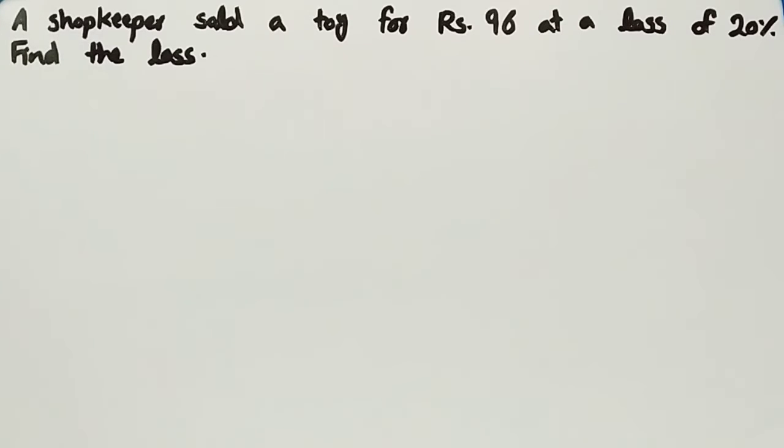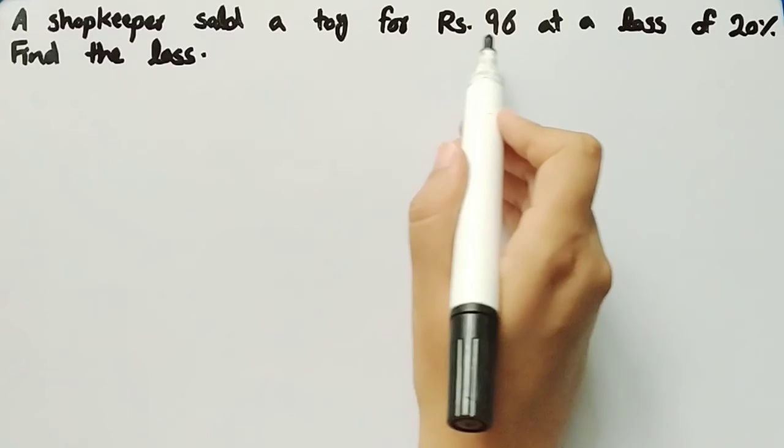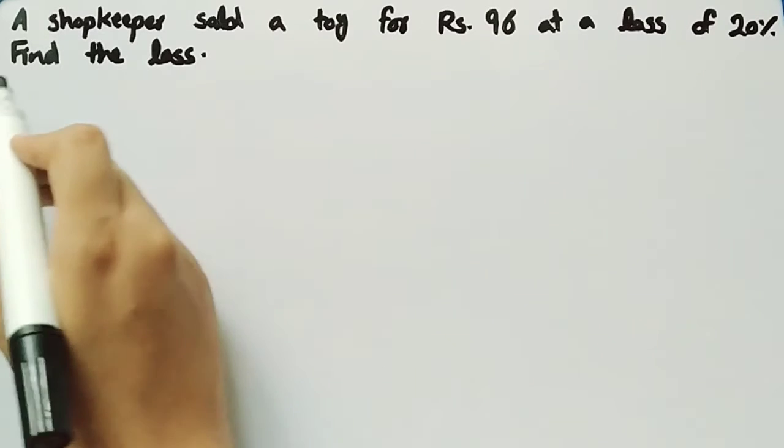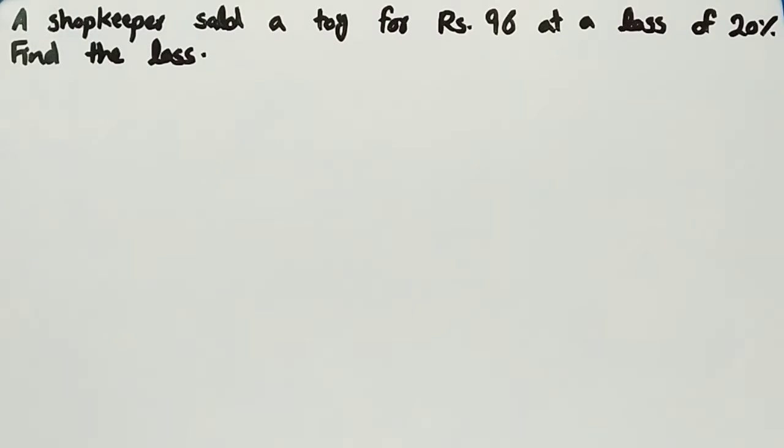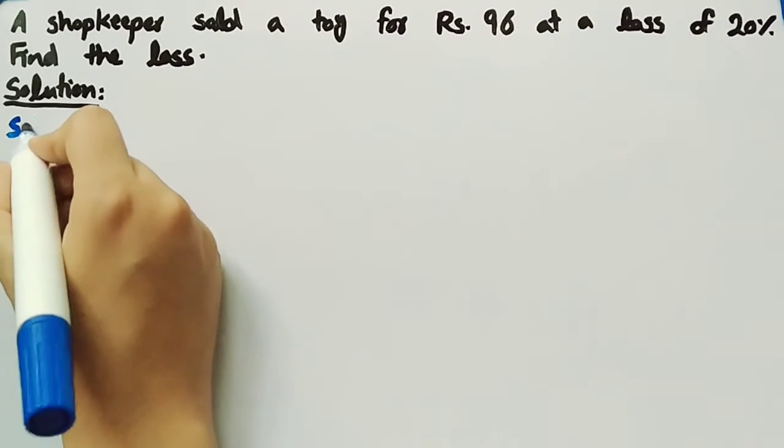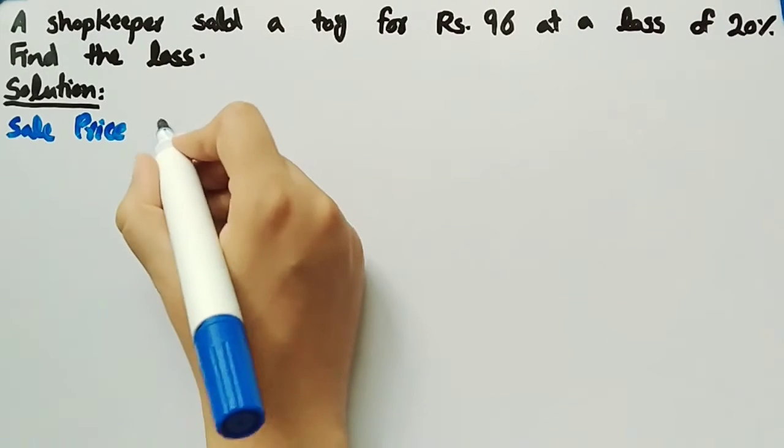In this video we will discuss a word problem related to loss. The problem states that a shopkeeper sold a toy for rupees 96 at a loss of 20%. Find the loss. It is given that sale price of a toy is rupees 96 and loss percentage is equal to 20.